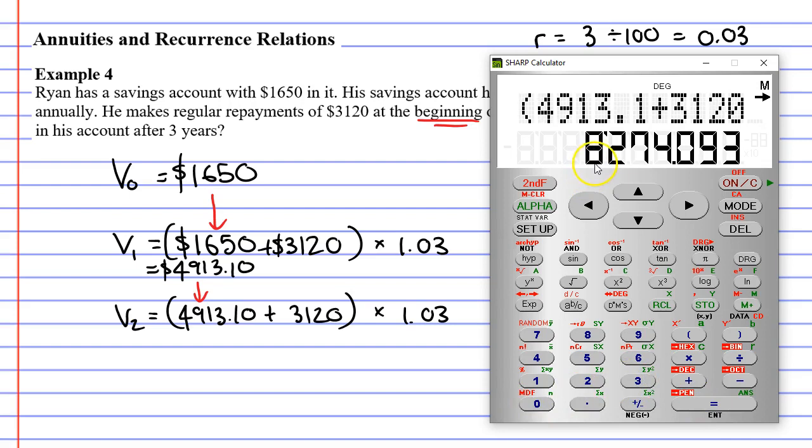And we get $8,274.09. Now, because we're not at our final answer yet, I'm going to write down all three numbers after the decimal point.